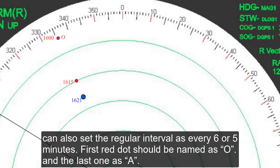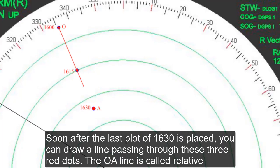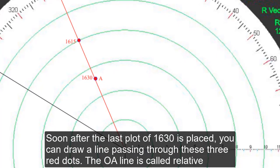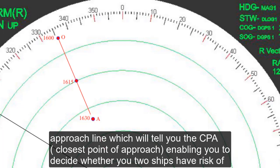First red dot should be named as O and the last one as A. Soon after the last plot of 1630 is placed, you can draw a line passing through these three red dots.